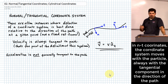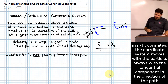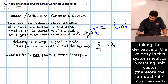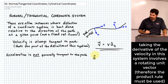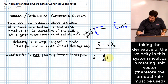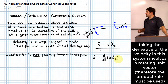Velocity is easy. When we get into acceleration, it gets just a little bit more tricky. The reason it gets more tricky is that we have to take this derivative of the velocity vector to find acceleration. Acceleration is the derivative of V times the unit vector in the tangential direction.